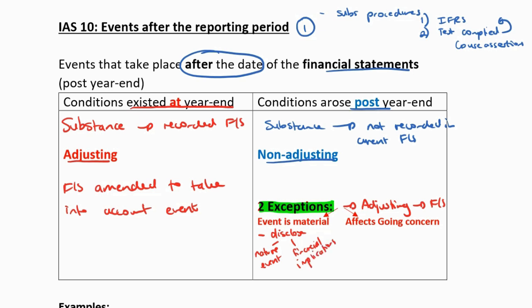So if it is a material event, the only adjustment that needs to happen to the financials is that they need to disclose the nature of the event and any financial implications. That's it — they don't have to do a complete adjustment like in the first instance where the conditions existed at year end. They just have to do a minor adjustment, which is just disclosure in the financials. The second exception is a major adjustment: if the event that arose after year end affects the going concern assumption of the company — so they actually can no longer continue — then they need to actually amend the financial statements in entirety.